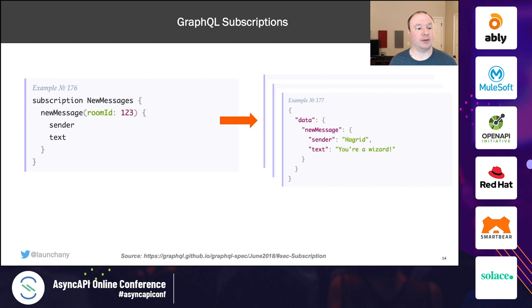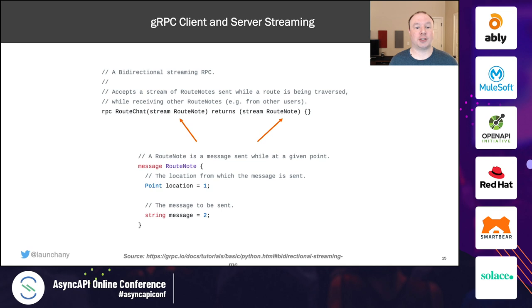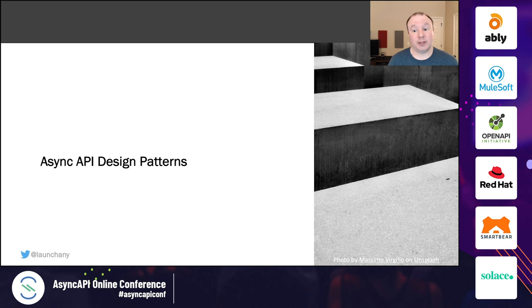GraphQL has the idea of subscriptions, where we define a subscription for something we're interested in and any matching event causes messages to be streamed back over HTTP, notifying mobile, web clients, and servers when new data exists or data has changed. gRPC has bi-directional streaming support, allowing service operations that accept an incoming stream, emit an outgoing stream, or both — communicating over HTTP/2 between client and server. This is very popular for microservices built with gRPC.